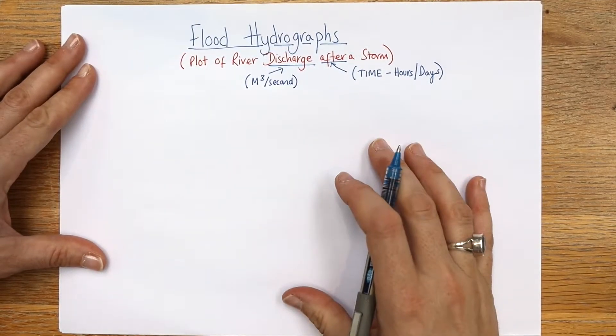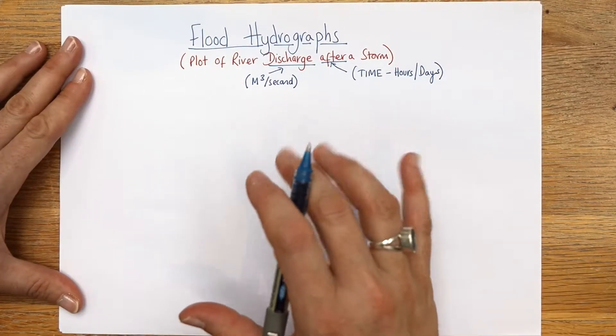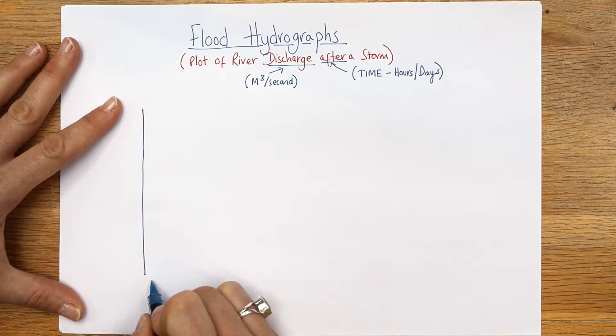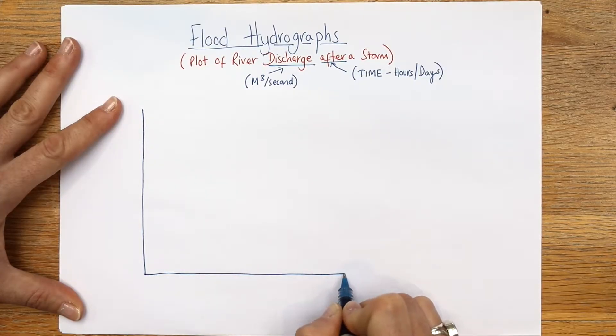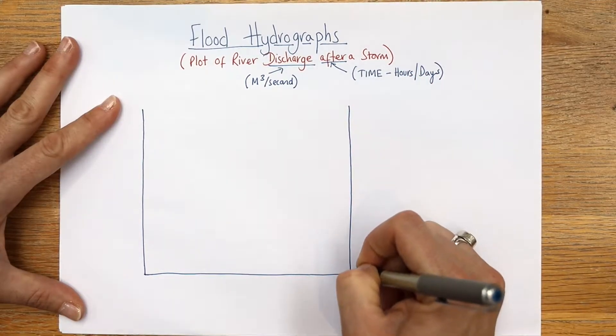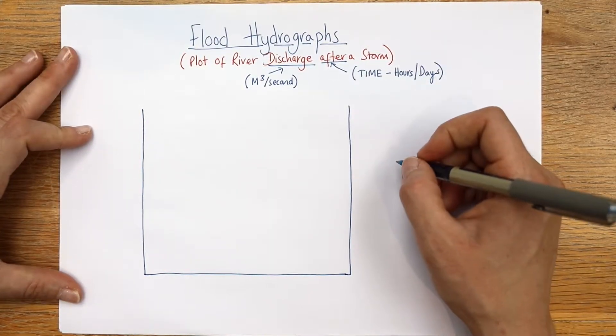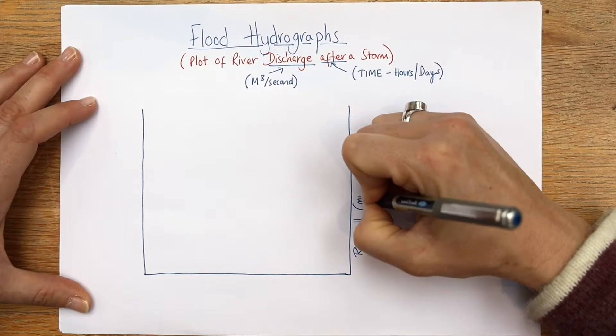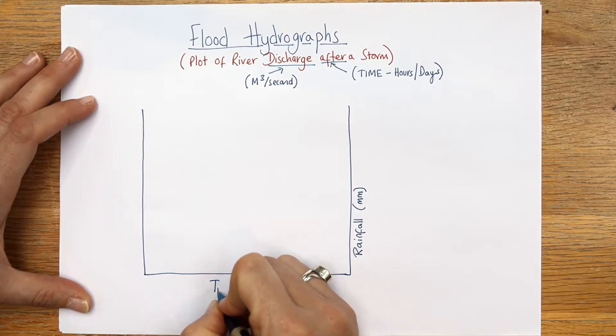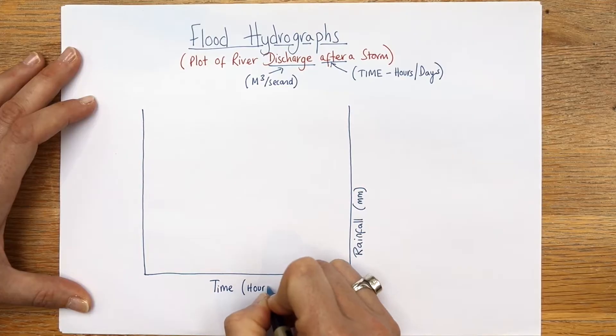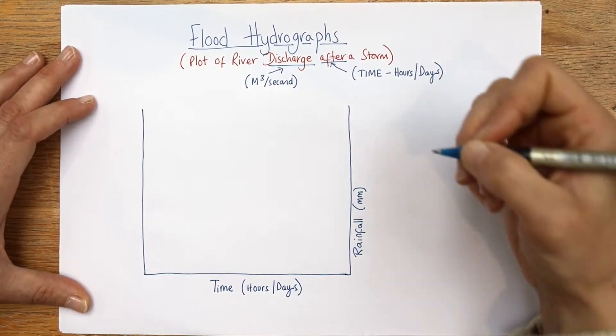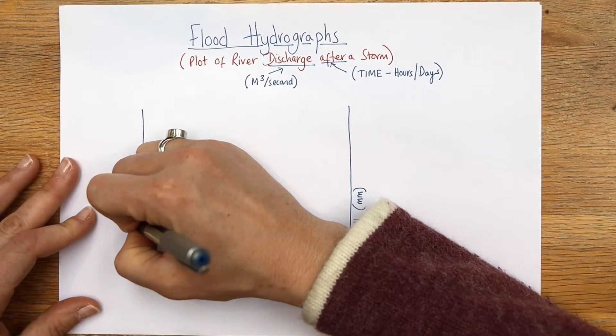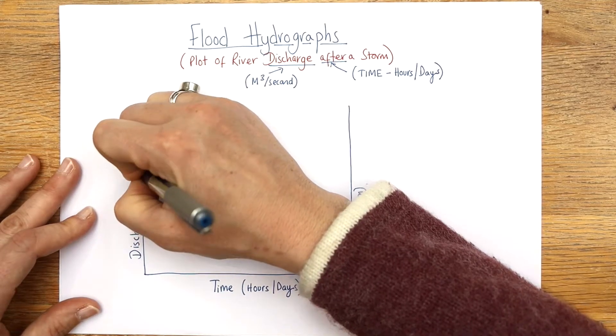Flood hydrographs - I think the best thing we can do is just draw one and I'll talk you through it. They have an axis down here and another one along here and another one down here. Let's label our axes first. On this side we're going to have rainfall, measured in millimeters. On this side we're going to have time, or at the bottom rather, and remember that's hours or days. On this side is where we measure the discharge, so how much water is coming out of the river, and that is in meters cubed per second.